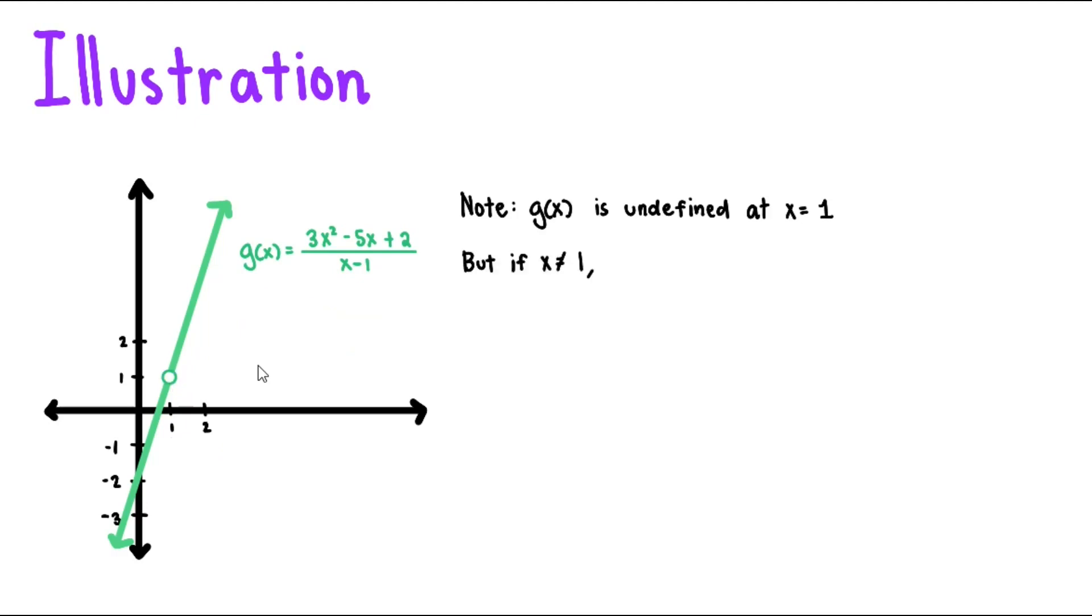But if x is not equal to 1, then take note that we can factor out the numerator of g of x into 3x minus 2 times x minus 1 all over x minus 1. We applied some factoring methods of quadratic trinomials. And since x is not equal to 1, then x minus 1 is not equal to 0, so we can cancel out these two, giving us 3x minus 2.